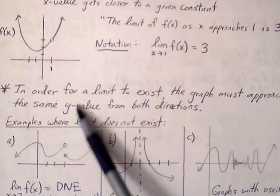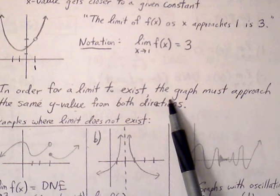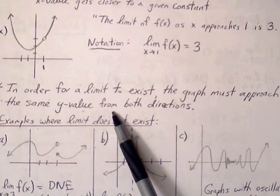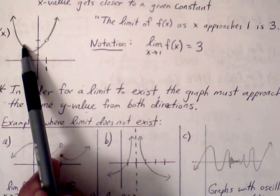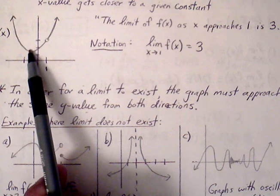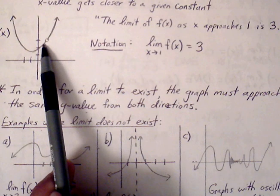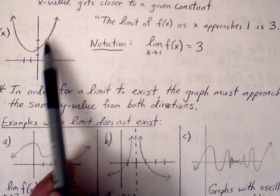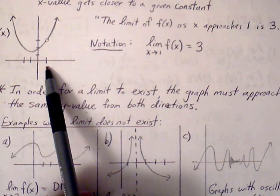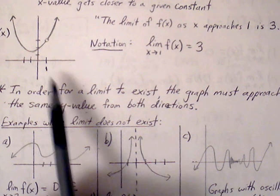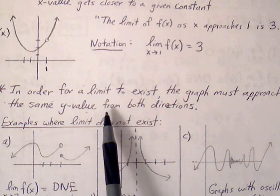In order for a limit to exist, the graph must approach the same y-value from both directions. We can see that the graph is connected towards the ordered pair from the left as well as from the right side. So therefore, the limit exists at 3.